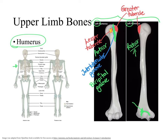In our shoulder we have a muscle called the deltoid muscle, which attaches on the lateral aspect of the humerus bone. This point of attachment is a rough spot in the shaft of the humerus. A rough spot is called a tuberosity. Since this tuberosity serves as an attachment point for the deltoid muscle, it is specifically called the deltoid tuberosity.